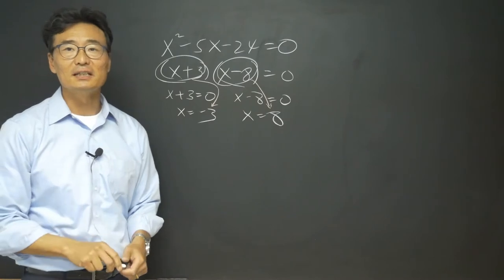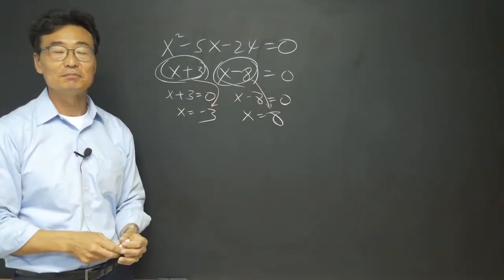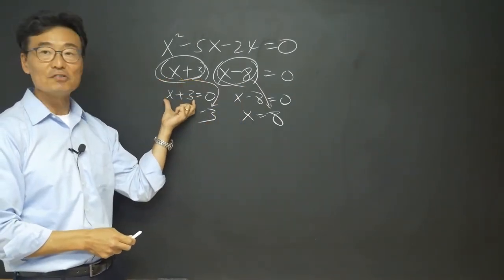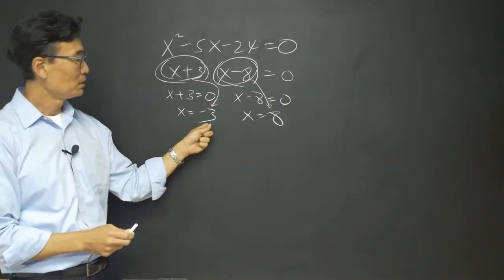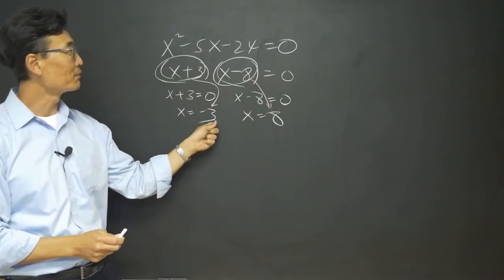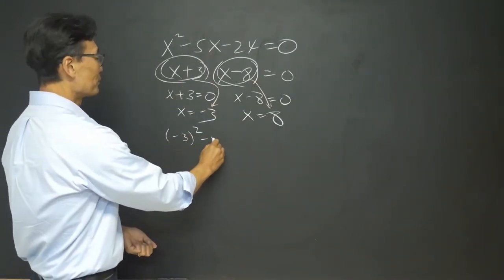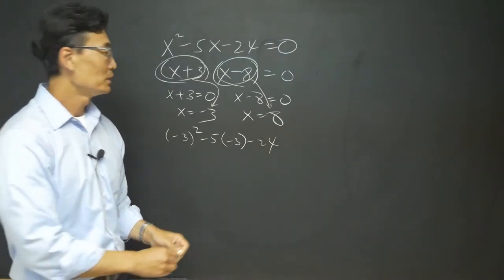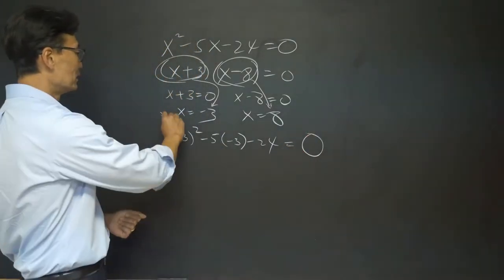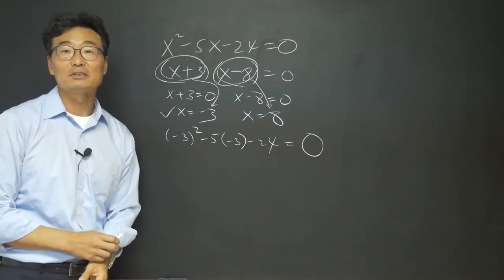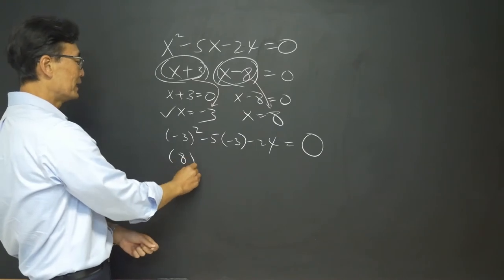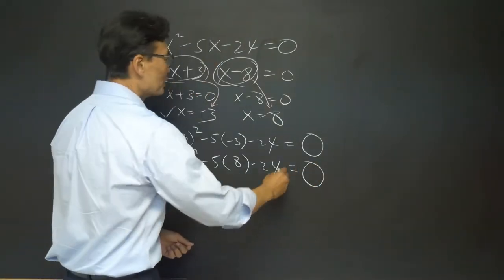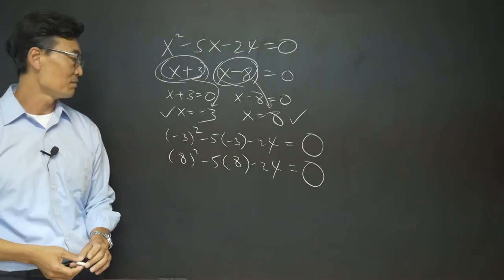It's better to understand why the signs are different rather than just memorizing the change. It's because we take whatever is in the parentheses, set it equal to zero, and then solve. If we take negative three and plug it into the original equation — negative three squared minus five times negative three minus 24 — you get zero. So negative three works. Then taking eight: eight squared minus five times eight minus 24, you get zero as well. So eight is an answer too.